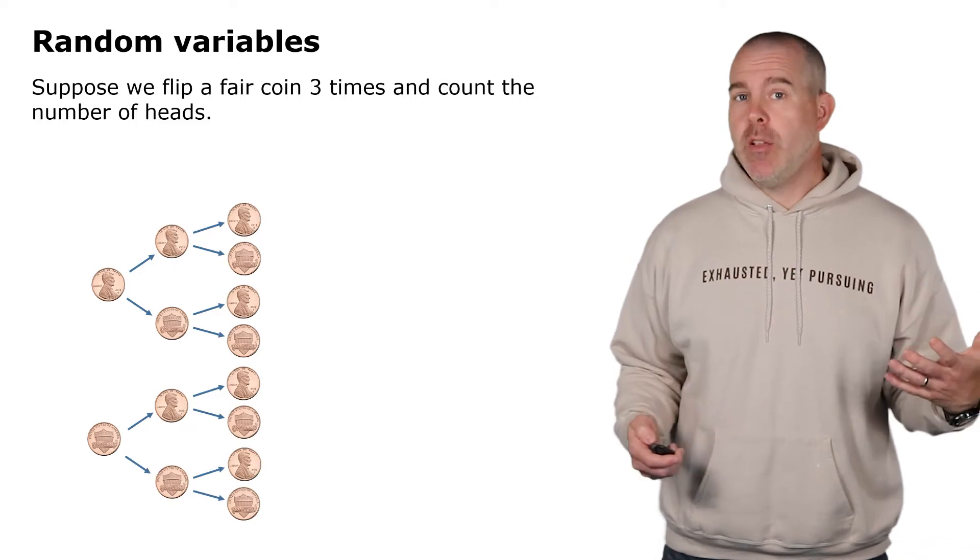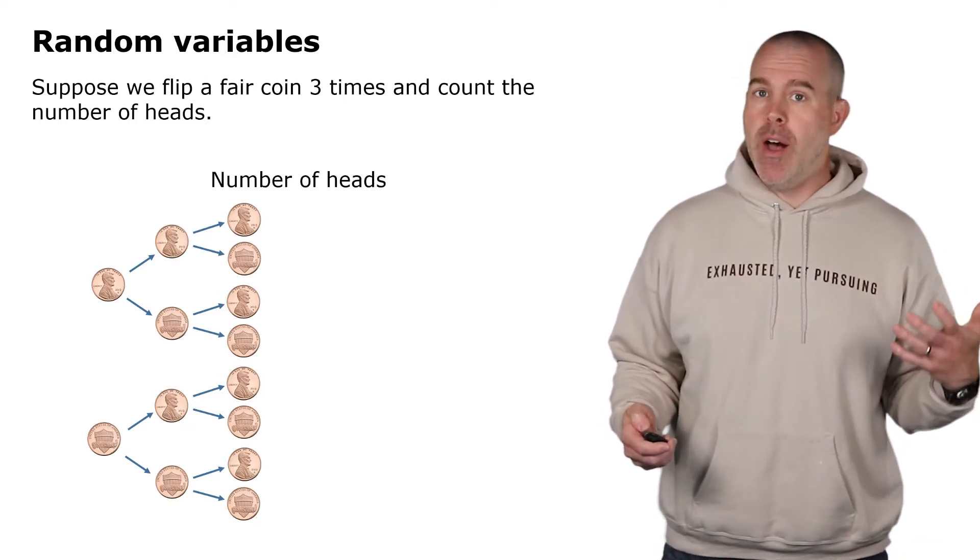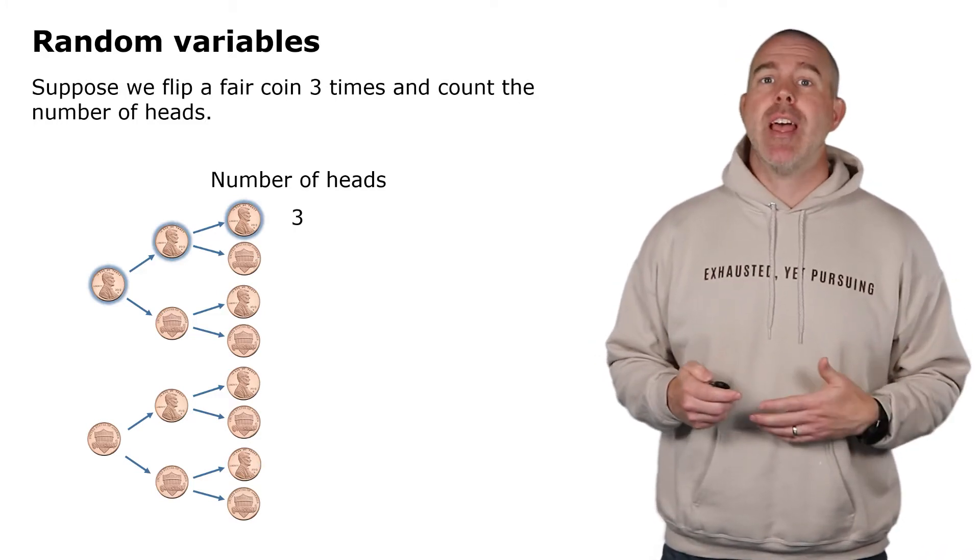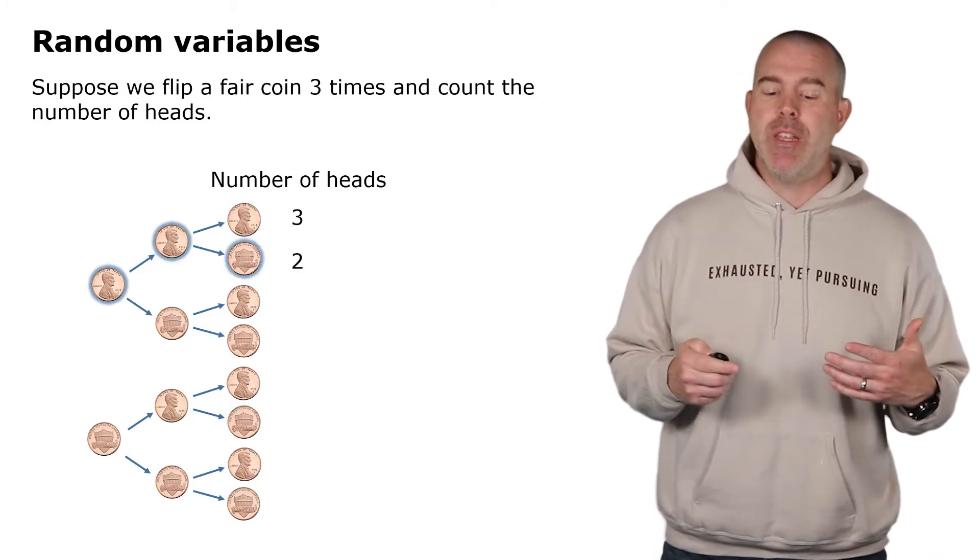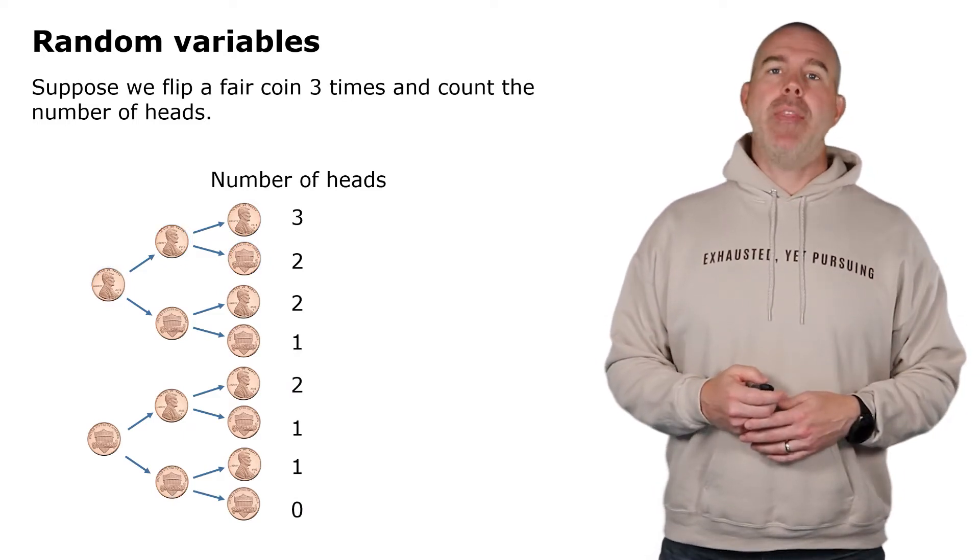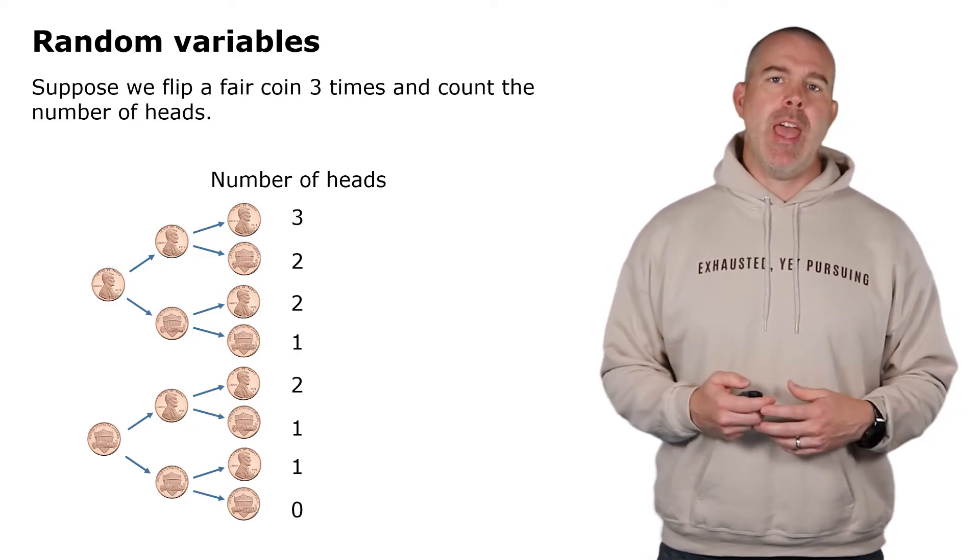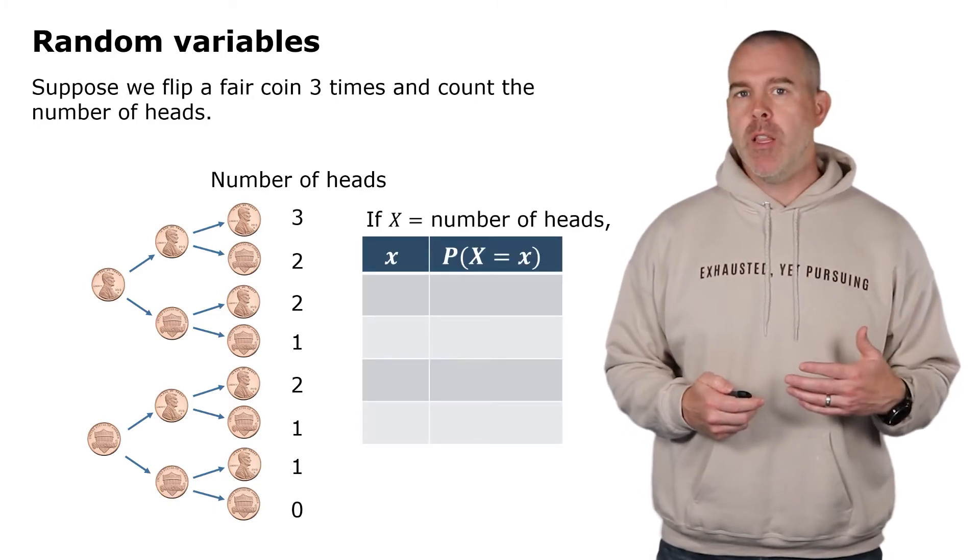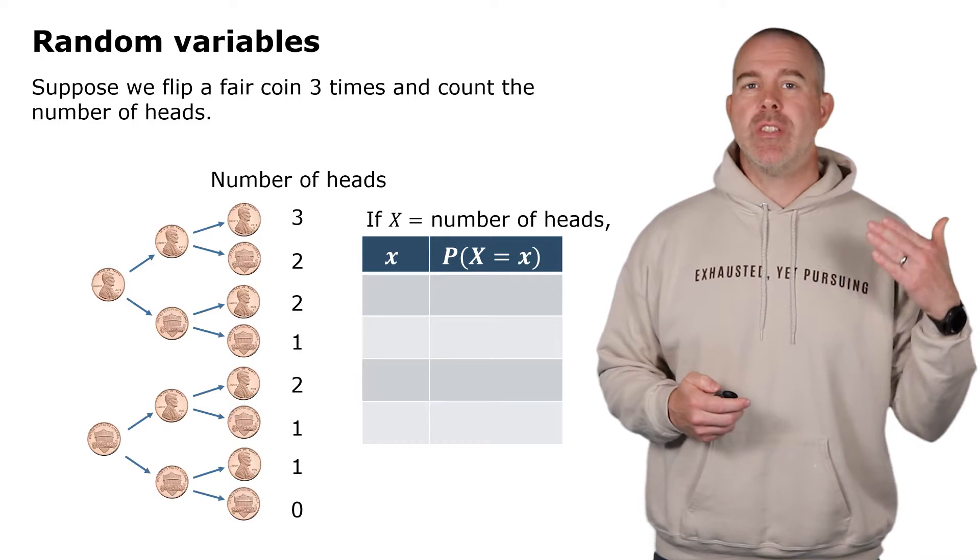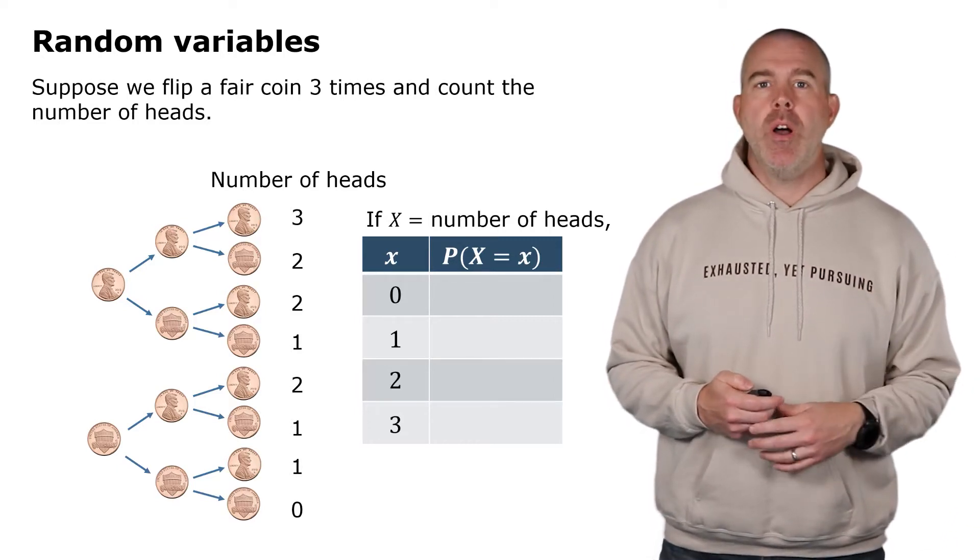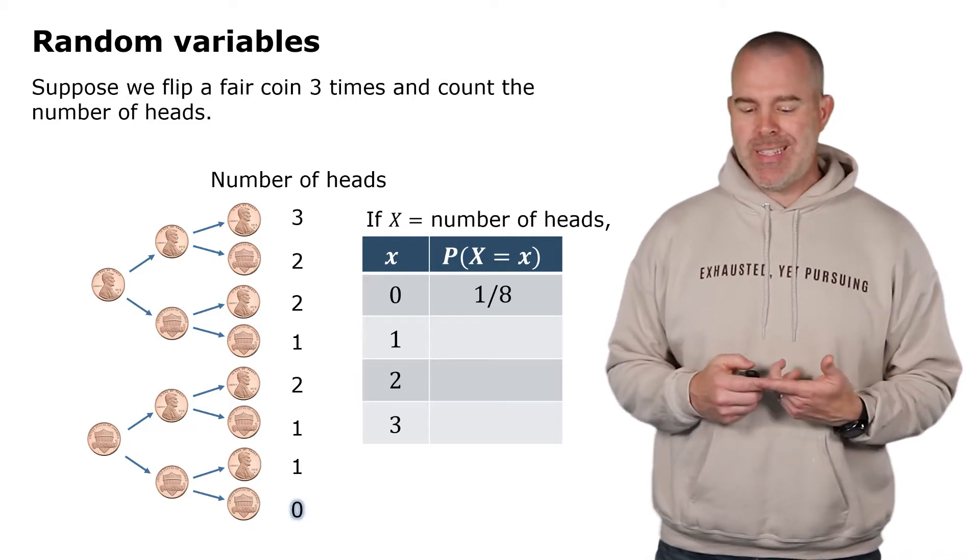So let's add a column here that is the total number of heads. The first one we could have heads, heads, heads, so that would be three. The second one we could have heads, heads, tails, so that would be two, etc., all the way down. And then let's combine these and make a little table. We're going to make a table where we have one column we'll call x, which is the number of heads.